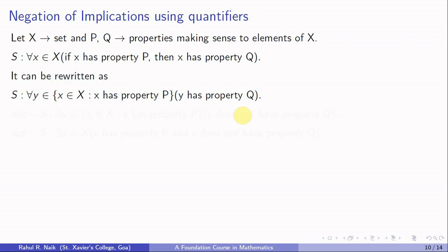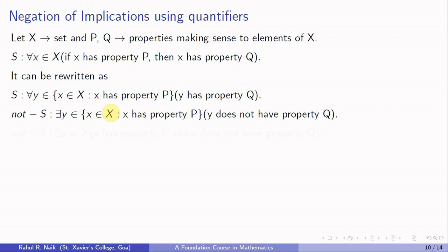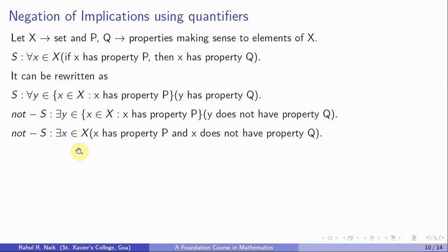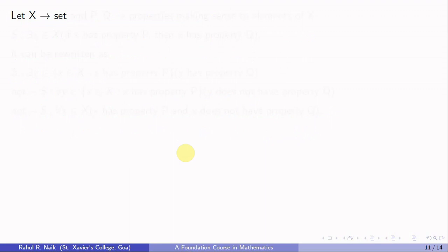Since the context set is the set of all x in X such that x has property P, the negation can be written as: there exists x in X such that x has property P and x does not have property Q. So the negation of 'for all x in X, if x has property P then x has property Q' is 'there exists x in X such that x has property P and x does not have property Q'.